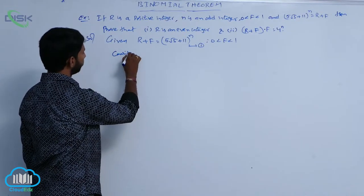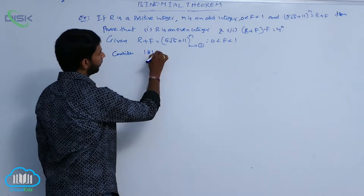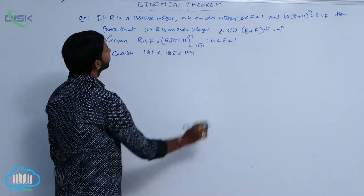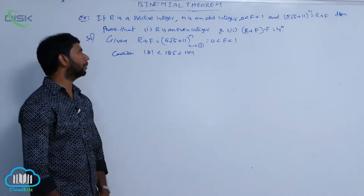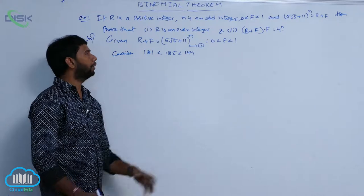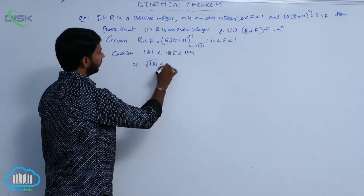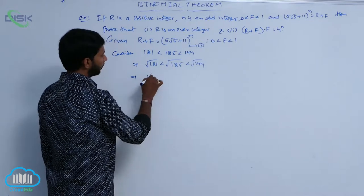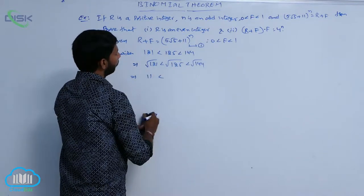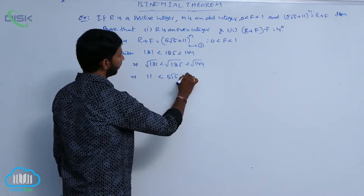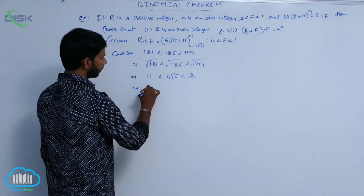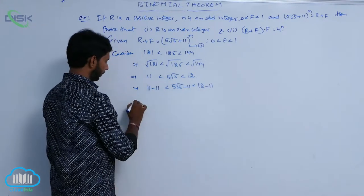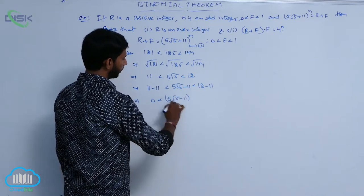Consider: 121 < 125 < 144. So 5√5 (which is √125) lies between two perfect squares, 121 and 144. Taking square roots: 11 < 5√5 < 12. Subtracting 11 from all sides: 0 < 5√5 − 11 < 1.